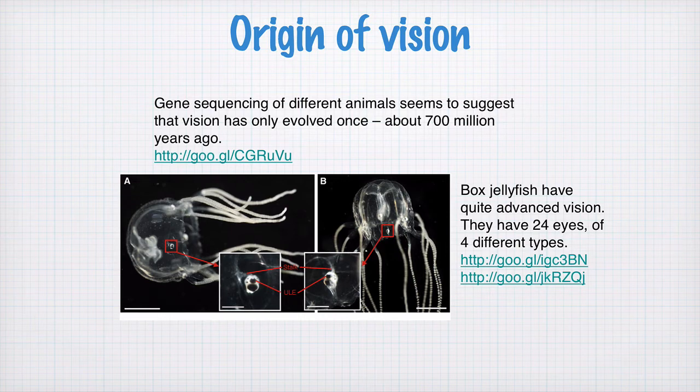There's one last thing I'll say about vision: it seems that in evolution on Earth, vision has arisen only once, about 700 million years ago. If you want to see details about the evolution of vision, have a look at this link here.